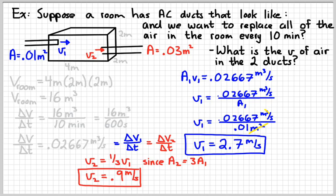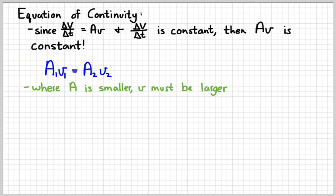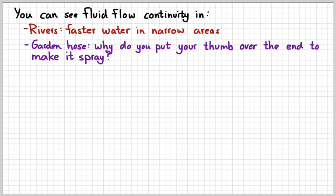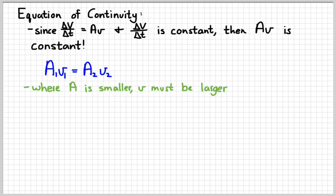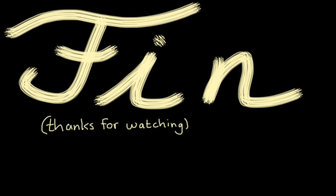So we're going to see lots of examples using this idea of fluid flow continuity. The basic idea again is that wherever the area is smaller, the velocity must be larger because in a closed pipe, the flow rate, both the volume and the mass flow rate, has to be constant. That's the big idea. The end.